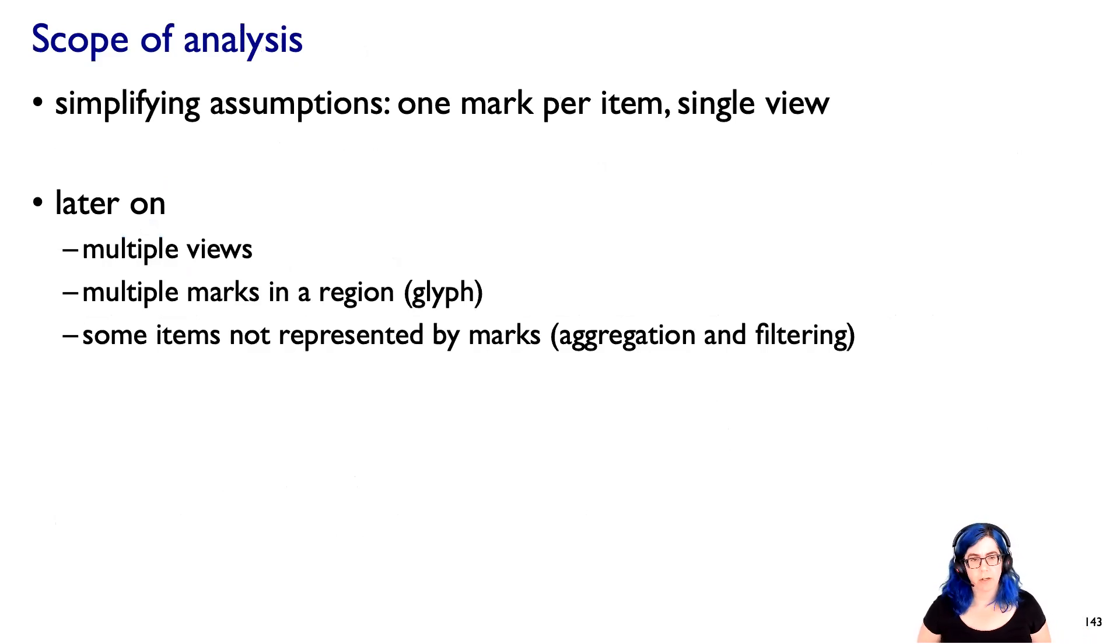In this kind of mark and channel analysis, we are making a simplifying assumption that there is one mark per item and that we're just looking at a single view. We'll talk more in some other segments about the idea of having multiple views, of having multiple marks within some spatial region - I'm going to call that a glyph - that you might have items that are not represented by marks, for example, if we do aggregation and filtering. This is a first level analysis of visual encoding and we will reach its limits and introduce other ideas later on. But it's a great place to start.